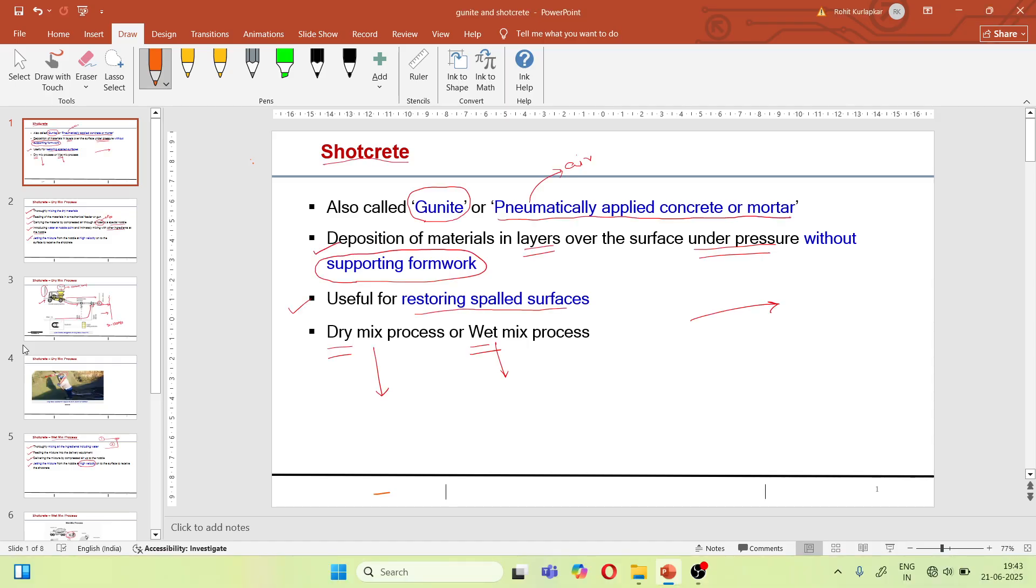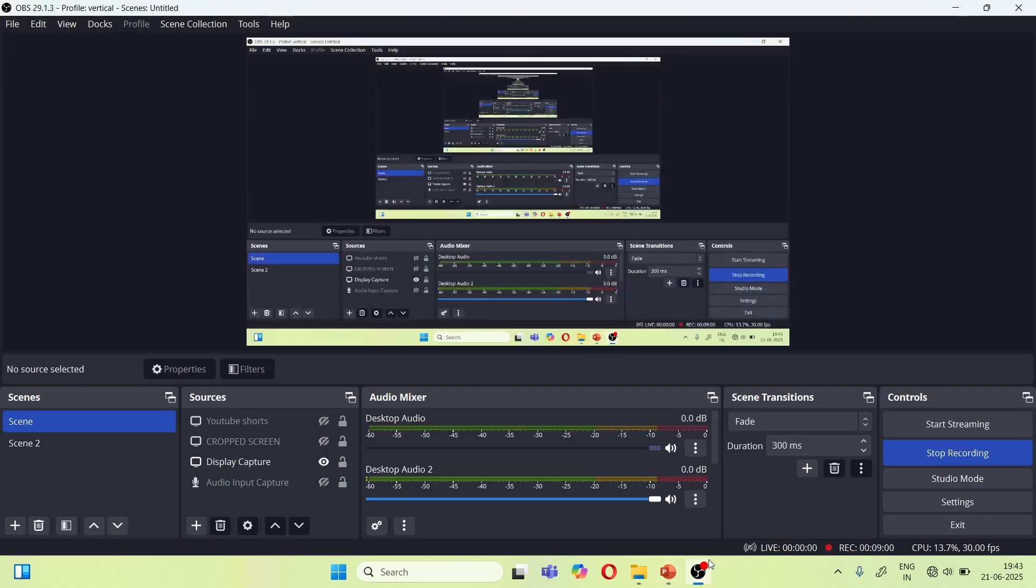I hope the topic is clear. Shotcrete which is also called as gunite, or we can say simple definition: pneumatically applied concrete or mortar. Thank you. Please like, share, subscribe the channel. If you have any doubt you can ask me in the comment box. I will reply. Thank you for your feedback.